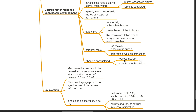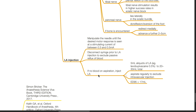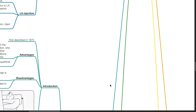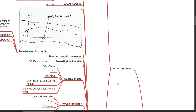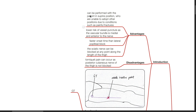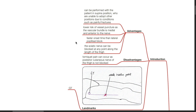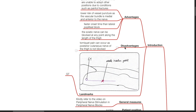Inject LA as described in the LeBart approach. The lateral approach can be performed with the patient in supine position for those unable to adopt other positions such as painful fractures. There is lower risk of vessel puncture as the vascular bundle is medial and anterior to the nerve, and faster onset time than lateral popliteal block. The sciatic nerve can be blocked at any point along the length of the thigh. Disadvantage: tourniquet pain can occur as the posterior cutaneous nerve of the thigh is not blocked.